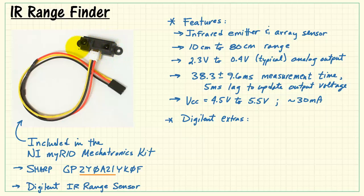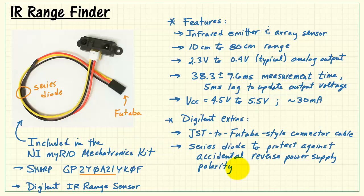The Digilent part includes some extras. The actual part is the black structure on the top. Digilent also supplies this custom connector. This is a GST to Futaba style connector cable, where we have the Futaba connector down here. We have a series diode in the VCC line, and that series diode protects against accidental reverse power supply polarity. In terms of our three wires, ground is black, VCC is red, and the analog output voltage signal is yellow.